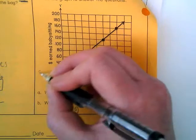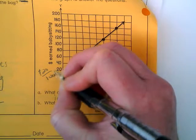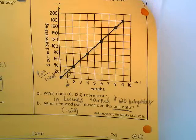What's our unit rate? $20 for one week. That means our slope is 20 over 1 for our rise over run. Okay?